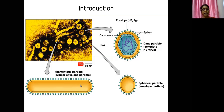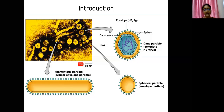In the blood of an HBV-positive person, you will not only have the complete hepatitis B virus but also these spherical and filamentous elements — in fact, more of them than the complete viral particles. These two forms consist of excess hepatitis B surface antigen (HBsAg), the envelope protein of the virus, which is produced in excess compared to other viral components and forms these filamentous and spherical particles.